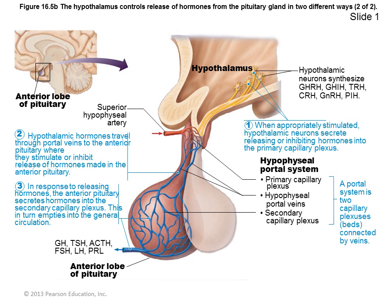By contrast, the anterior pituitary receives hypothalamic neurons that synthesize releasing and inhibiting hormones — including GHRH, GHIH, TRH, CRH, GNRH, and PIH — into primary capillary plexuses. Through the hypophysial portal vein, these reach the endocrine cells within the anterior pituitary, which secrete growth hormone, TSH, ACTH, FSH, LH, and prolactin into secondary capillary plexuses so they can circulate to reach target organs.